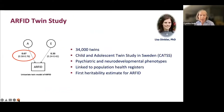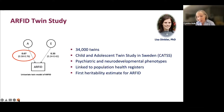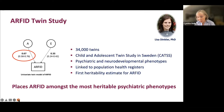We now have a heritability estimate for ARFID from a study by Lisa Dinkler, one of my postdocs in Sweden. We were interested in starting a GWAS of ARFID, but funding bodies appropriately asked: why do a GWAS if we don't know the disorder is heritable? She went to the Child and Adolescent Twin Study in Sweden — 34,000 twins — created the ARFID phenotype, linked it to population health registers, and derived the first heritability estimate for ARFID at about 67 percent. This places ARFID among the most heritable psychiatric phenotypes, giving us clear justification to move forward with a GWAS of ARFID.